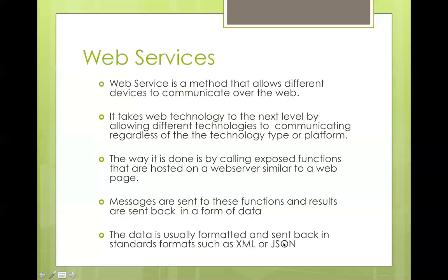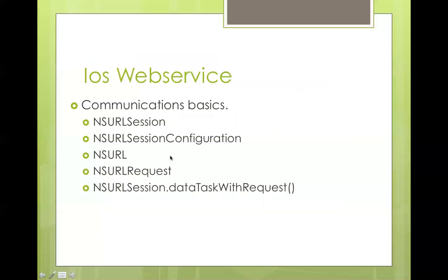Sometimes you receive binary data, but not in this format — it would be something like an image URL. In our example, we're looking at getting JSON data. We'll talk about JSON when we get to it. Now, how do you do it in iOS?